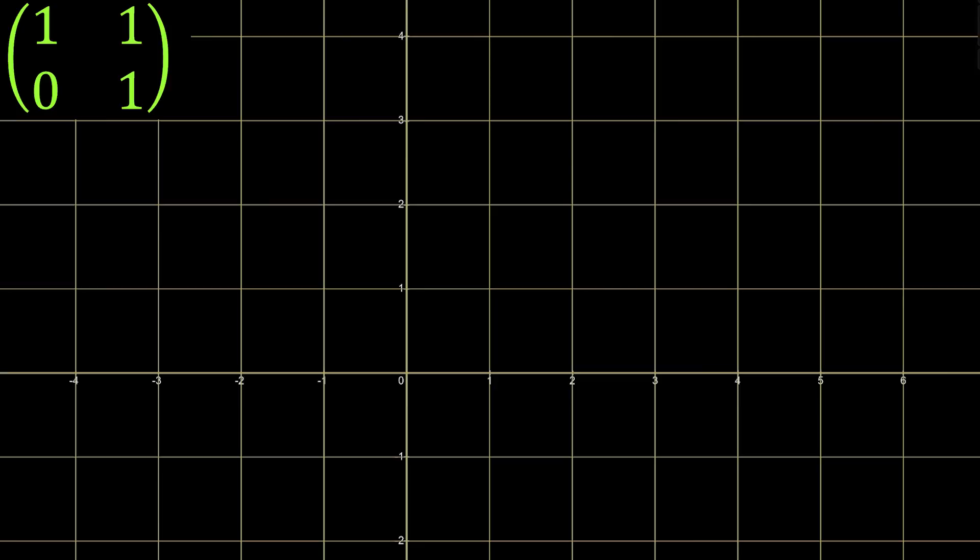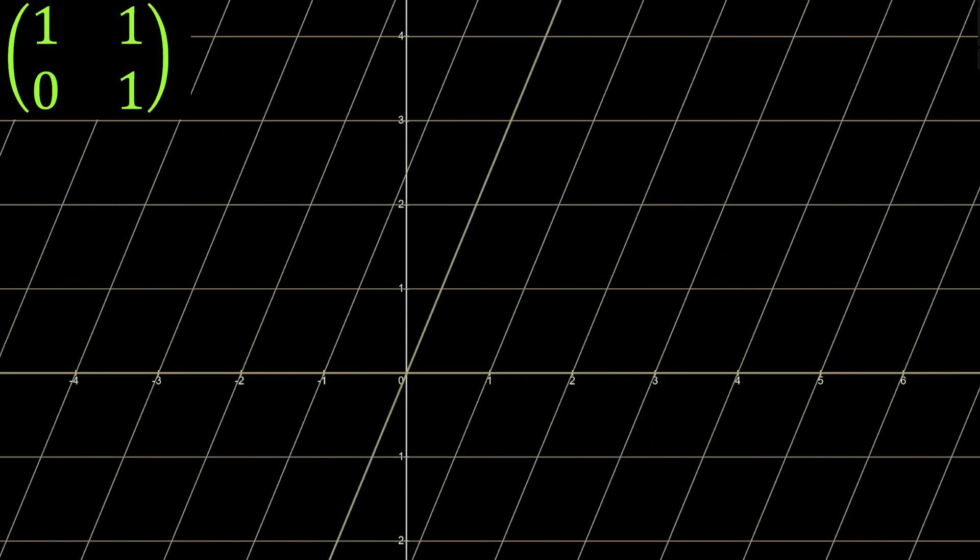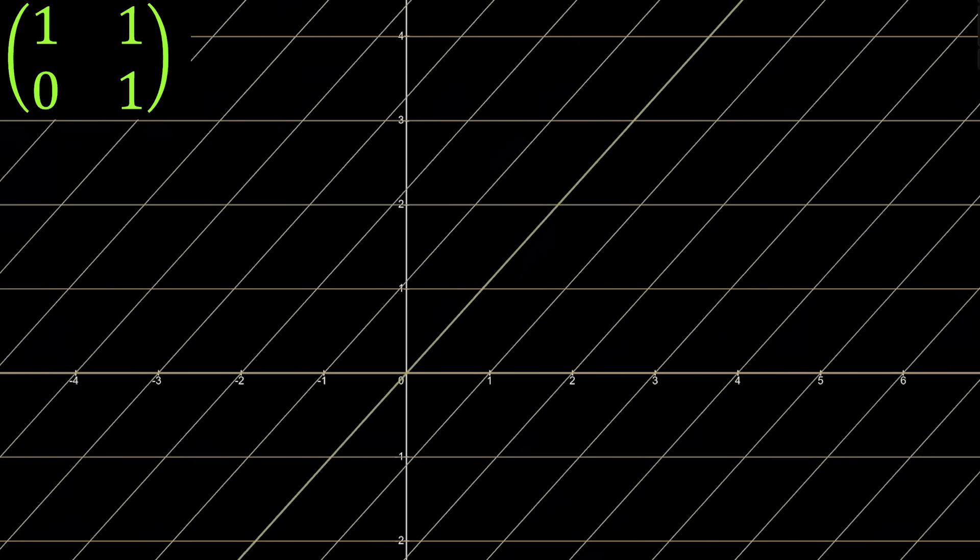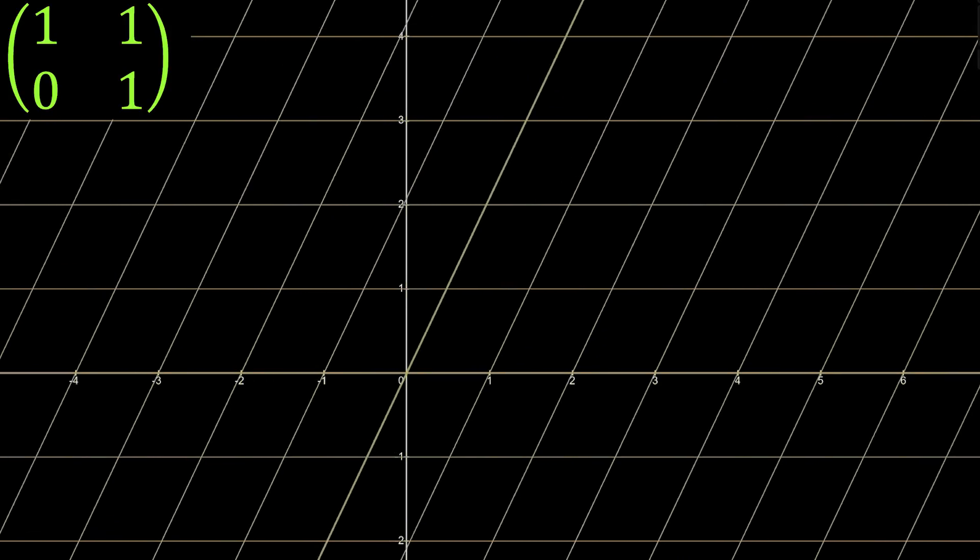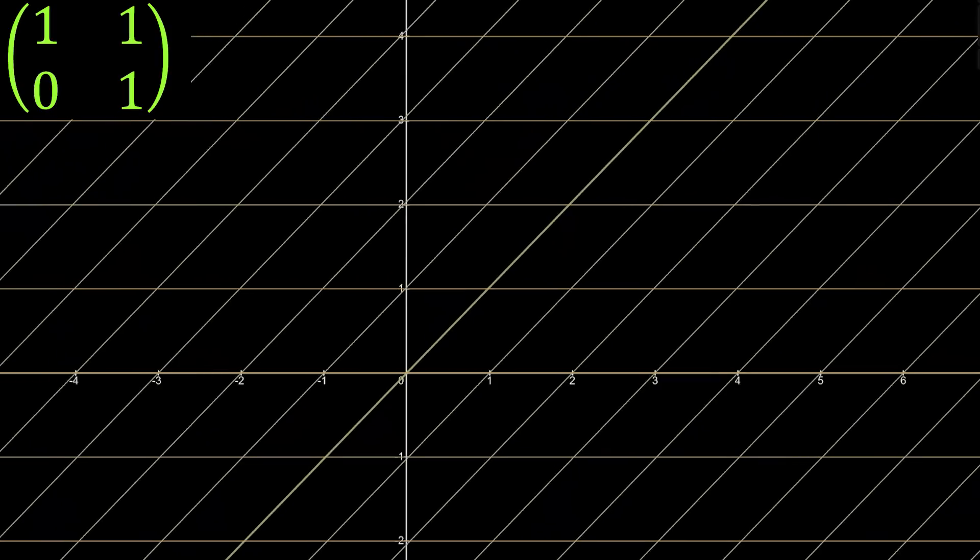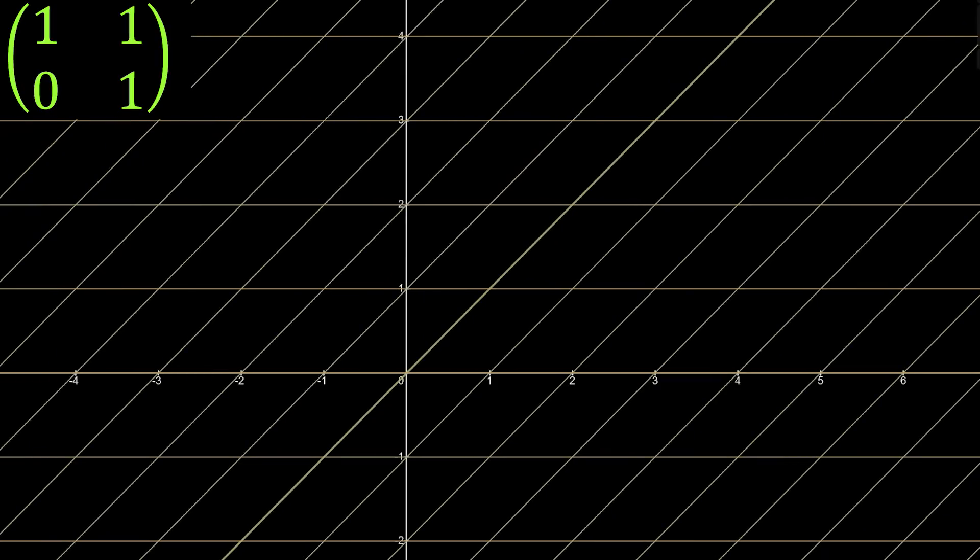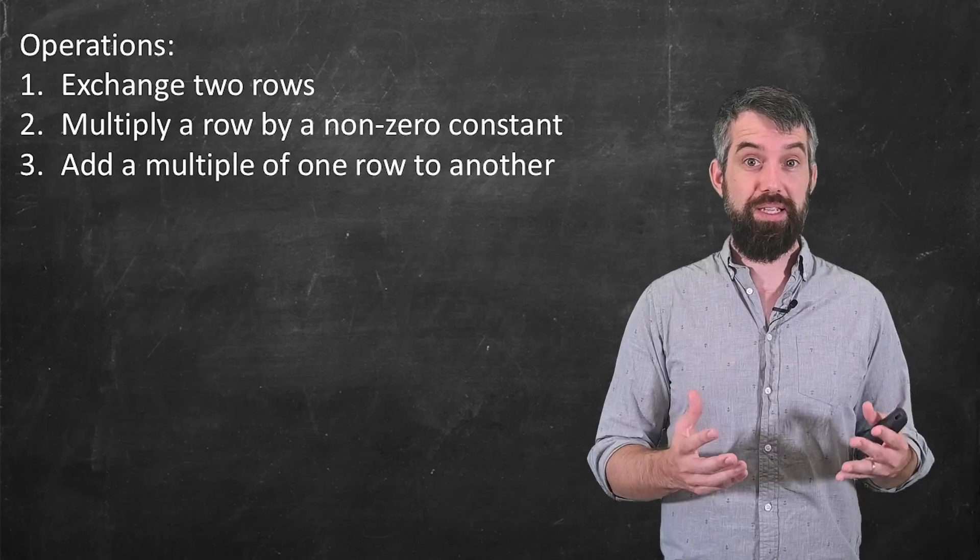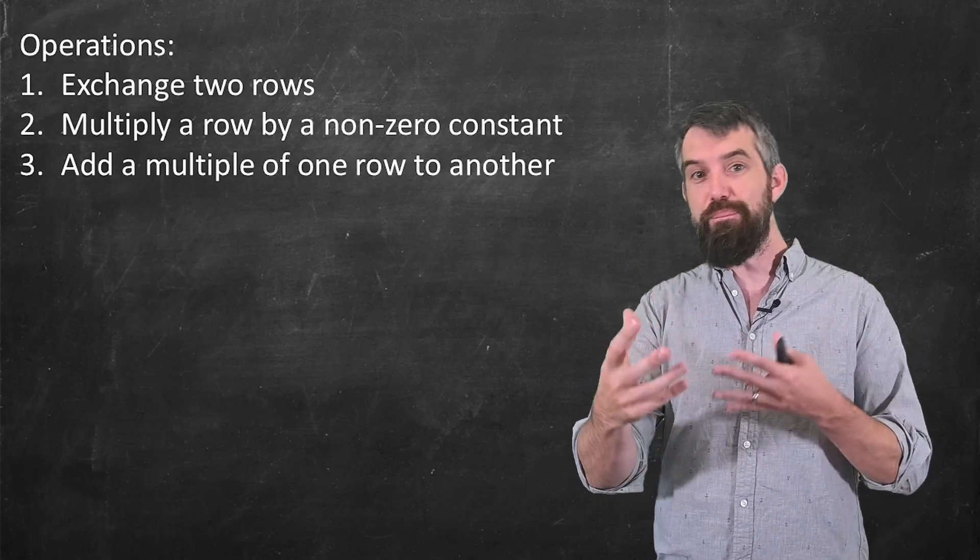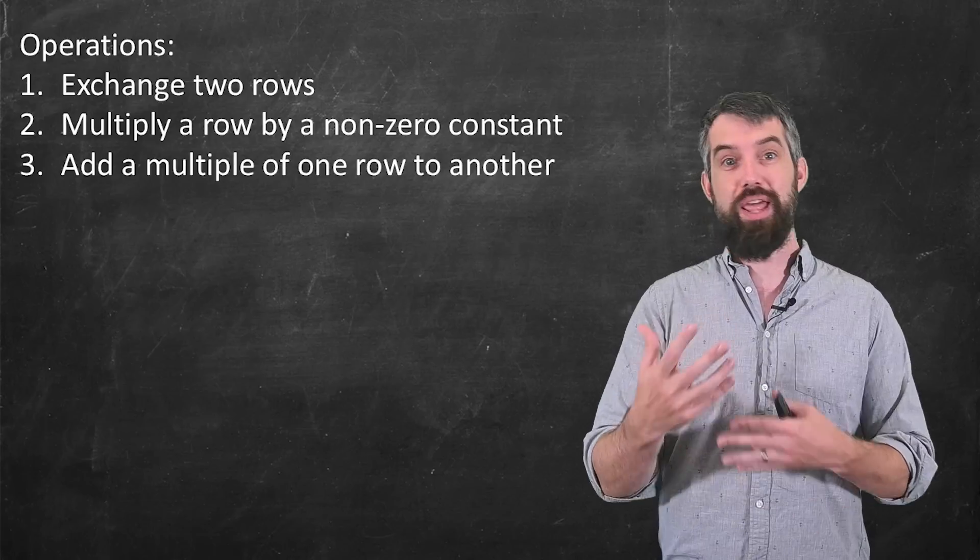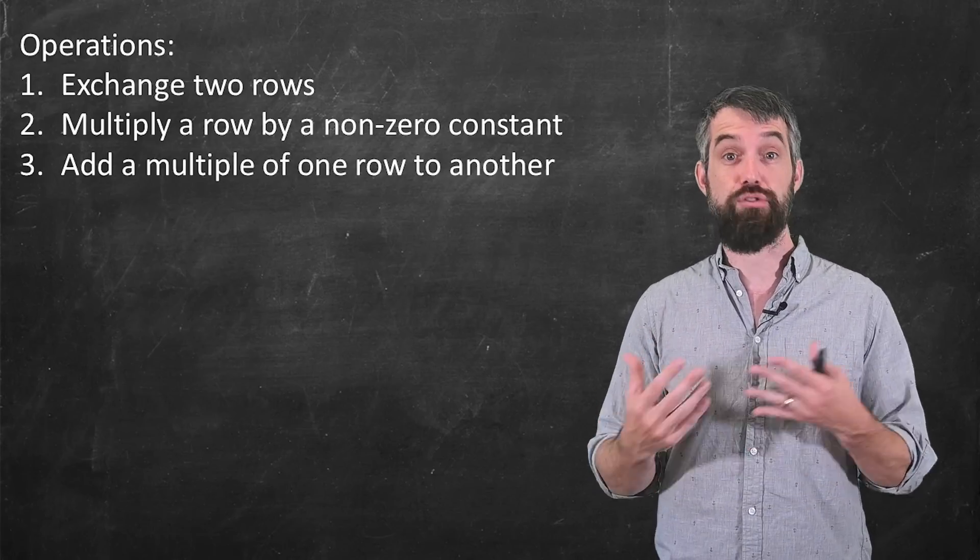But the really interesting one is what happens when I add a constant multiple of one row to the other. This is what is called a shear transformation. Where, for example, everything moves only horizontally. There's ones where they only move vertically as well. But it's at different amounts depending on your vertical coordinate. This is a shear transformation. And so basically, each of these algebraic operations that I can do has a different geometric interpretation when I think about it in terms of linear transformations.